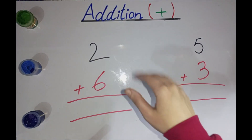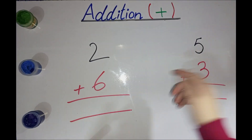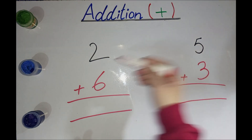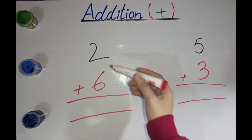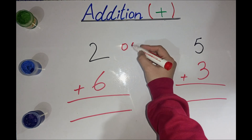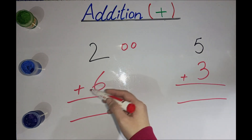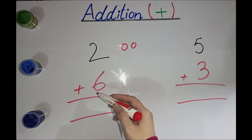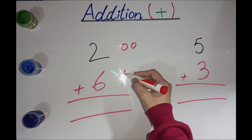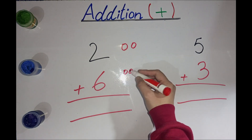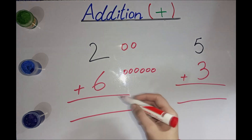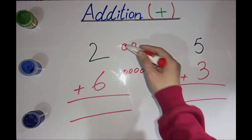Hello kids, today we learned about addition. What is this number? Now make two circles here — one, two. What is this number? Six. Now make six circles here — one, two, three, four, five, six. Now count all these circles.